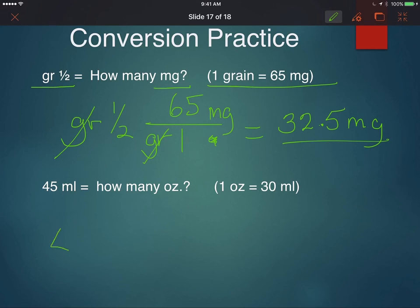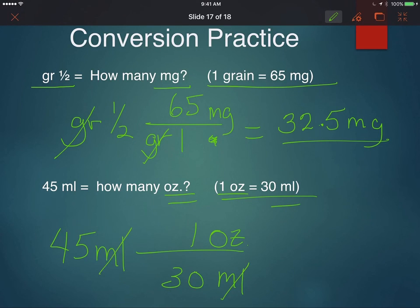Second problem, 45 milliliters is equivalent to how many ounces? Here's your conversion. I'm going to put mils on the bottom so I can cancel. Ounces on the top, 30 mils is equivalent to one ounce. Cancel units. This problem becomes 45 times one divided by 30, which equals 1.5 ounces.